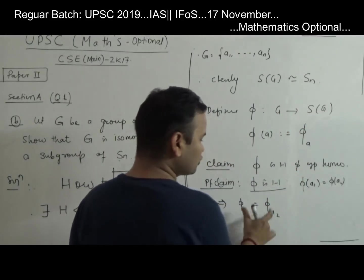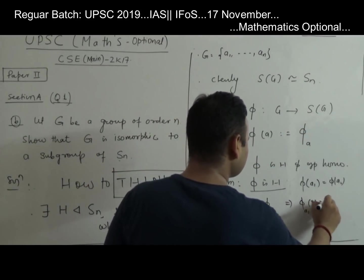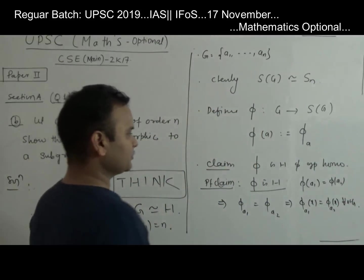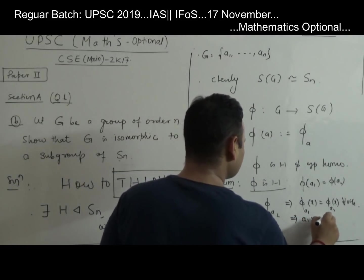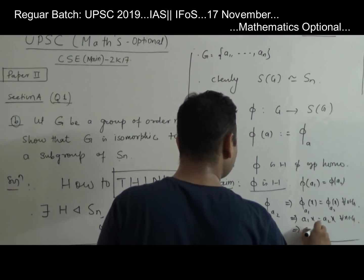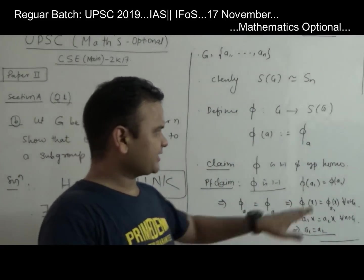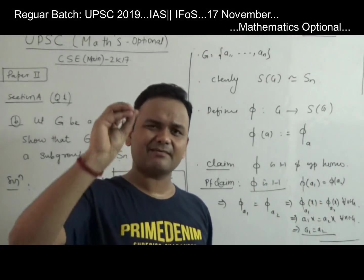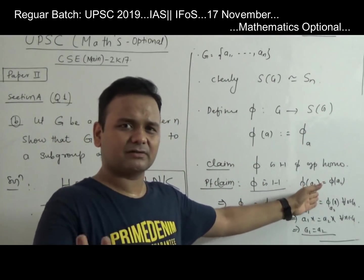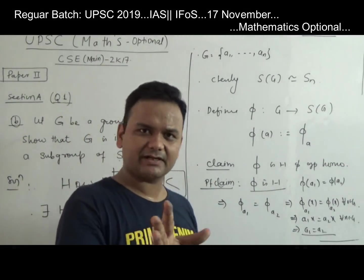Since these two functions are the same, we have φ_{a₁}(x) = φ_{a₂}(x) for all x belonging to G. That means a₁x = a₂x for all x in G. By the left cancellation law, a₁ = a₂. So the function Φ is one-one. In the exam, you should clearly write that Φ is one-one — they will give you the marks.